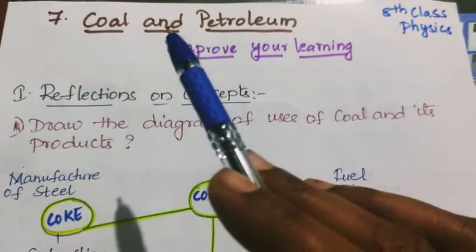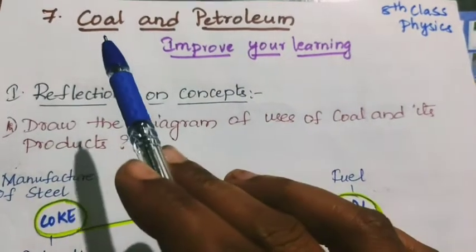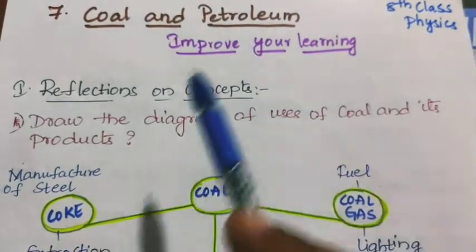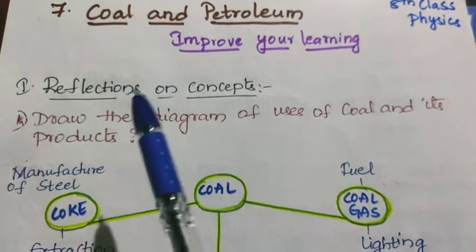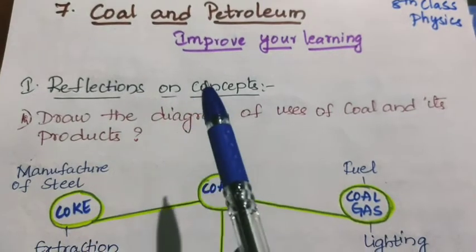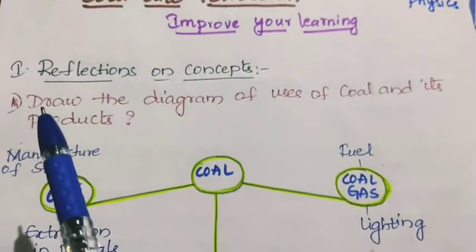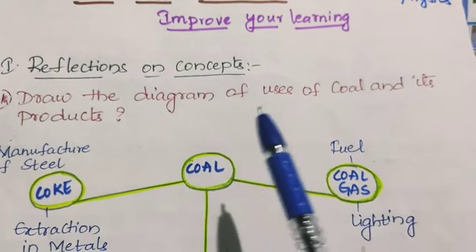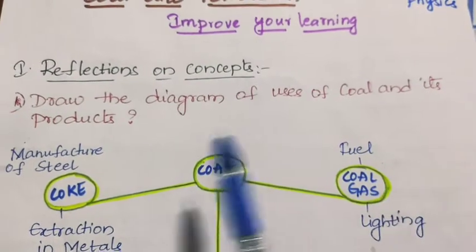Hello students, today we will explain the question answers of the lesson coal and petroleum. Look at the first concept: reflection on concepts. Under this category, we will see the first question: draw the diagram of uses of coal and its products.